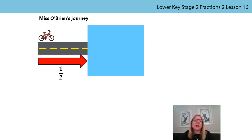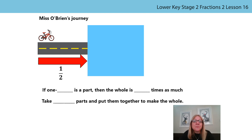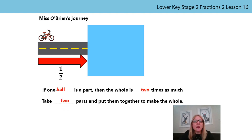First, let's think about Miss O'Brien's journey to school. What do we already know from previous lessons that can help us visualize the whole of her journey? Could you remember the stem sentence we used last time? That's the one: if one is a part, then the whole is that many times as much — take the parts and put them together to make the whole. This is one half of Miss O'Brien's journey. If one half is a part, then the whole is two times, or twice, as much. Take two parts and put them together to make the whole.